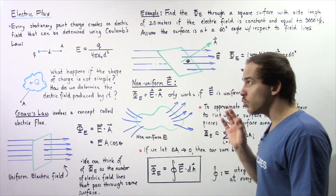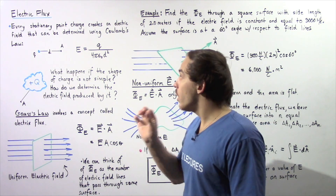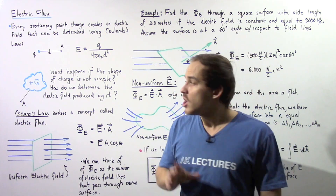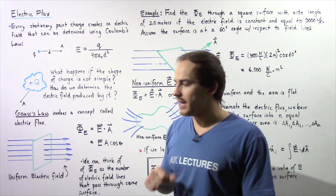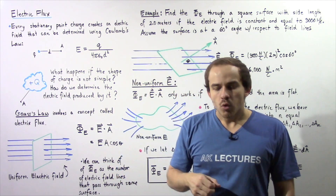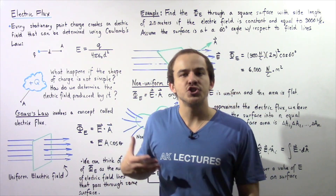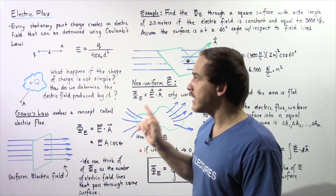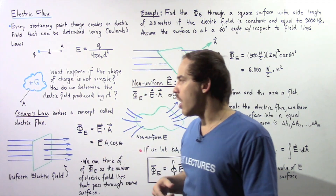This equation only works as long as our stationary electric charge is assumed to be a point charge. But what happens if the shape and size of the electric charge is not that simple? For example, what if we have a blob of electric charge? How exactly do we calculate the electric field at point A as a result of this blob? We have to define a new relationship between electric charges and electric fields that is more general than Coulomb's law. This new relationship is given by Gauss's law.